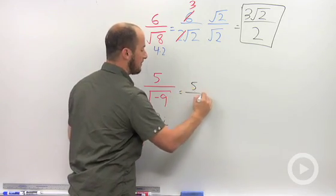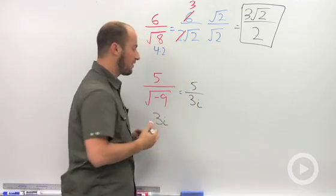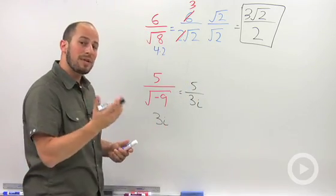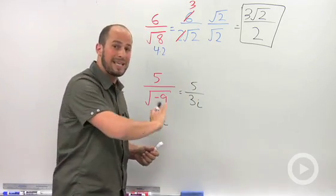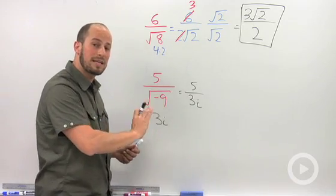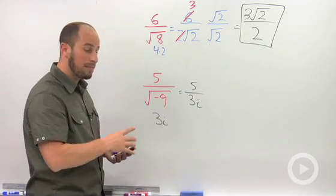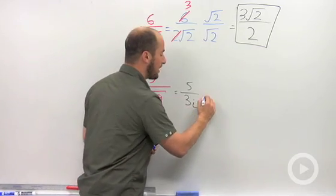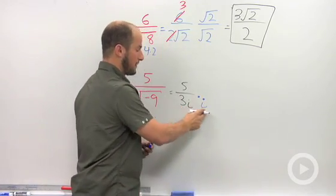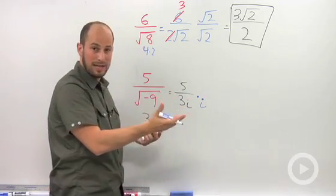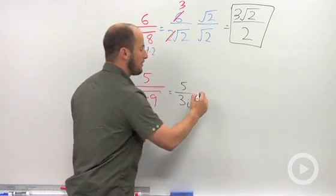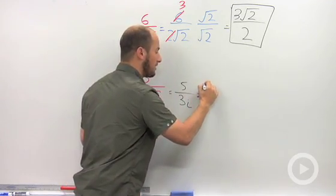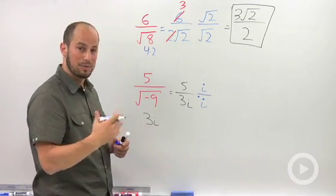Rewriting this, we have 5 over 3i. The 3 isn't presenting a problem, so we can leave it as is, but what we really want to do is get rid of that i. Remember that i times i, i squared, is negative 1. So if we multiply this by i in the denominator, we'll get i squared, negative 1. Our square root is gone. We have to multiply by 1, so we need an i in the top as well.